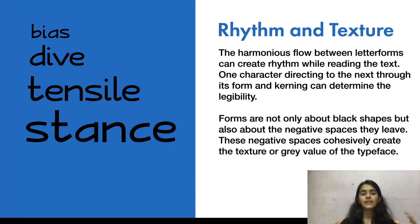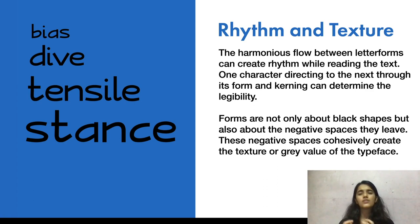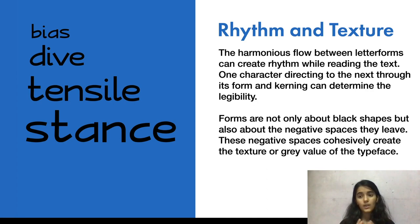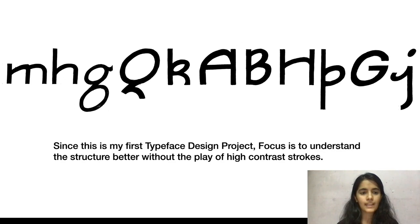As I moved ahead, I started seeing letters together as words. Because of the upward movement in my characters, it was easy to make characters where one can direct to the next, and I think the harmonious flow between letter forms can create rhythm while reading the text. Forms are not only about black shapes but also about the negative spaces they leave, and these negative spaces cohesively can create the texture — or what we call the grey value — of the typeface, which can decide how people consume and interpret it.